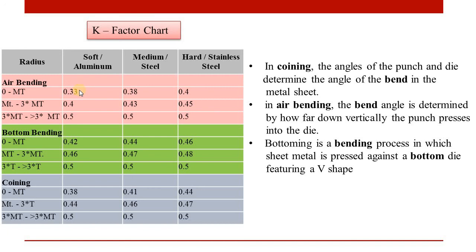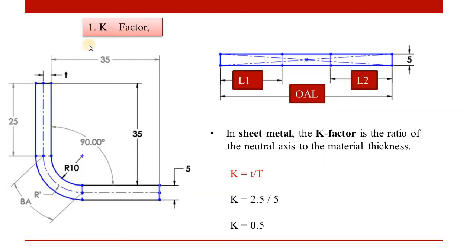The k-factor value is very important. In the k-factor chart, we have sheet metal in three categories based on the ratio of bend radius to material thickness: 0 to 1x metal thickness, 1x to 3x metal thickness, and greater than 3x metal thickness. Within each range, we can determine the k-factor based on the material definition.